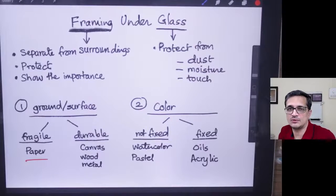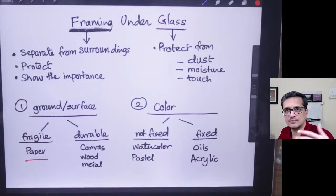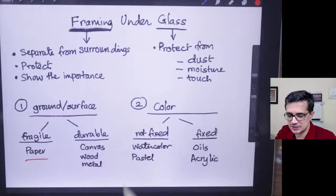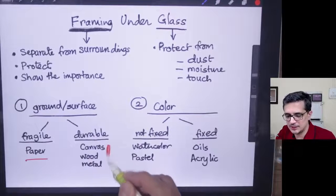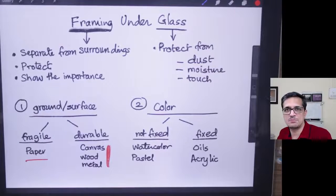There are materials which are much more durable in nature like canvas, wood, or metal. Generally, they don't degrade so much as paper—that's why they are considered more durable.